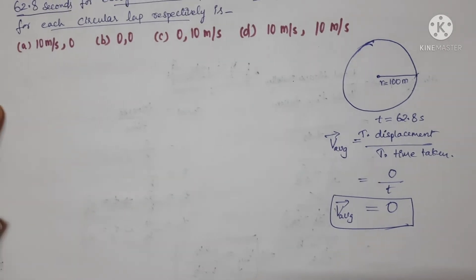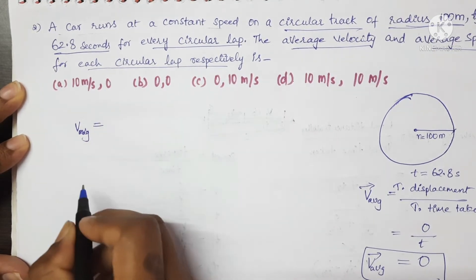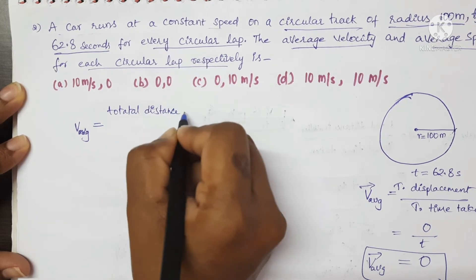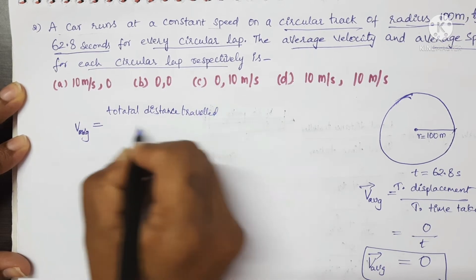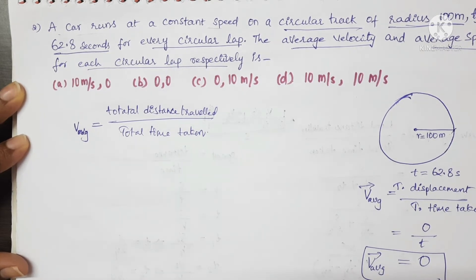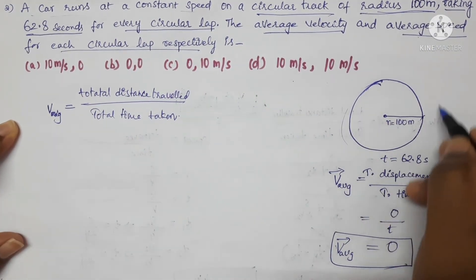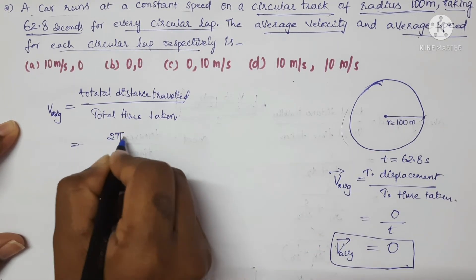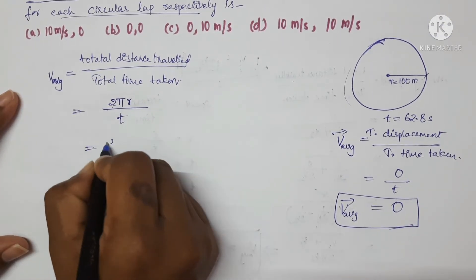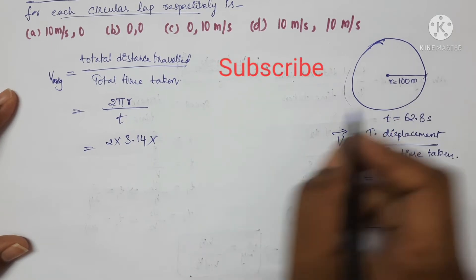Now let us find the average speed. The formula for average speed is total distance travelled upon total time taken. In this case, for one circular rotation the total distance travelled is the circumference: 2πr. Upon total time taken t, this equals 2 × 3.14 × 100 meters, upon time 62.8 seconds.